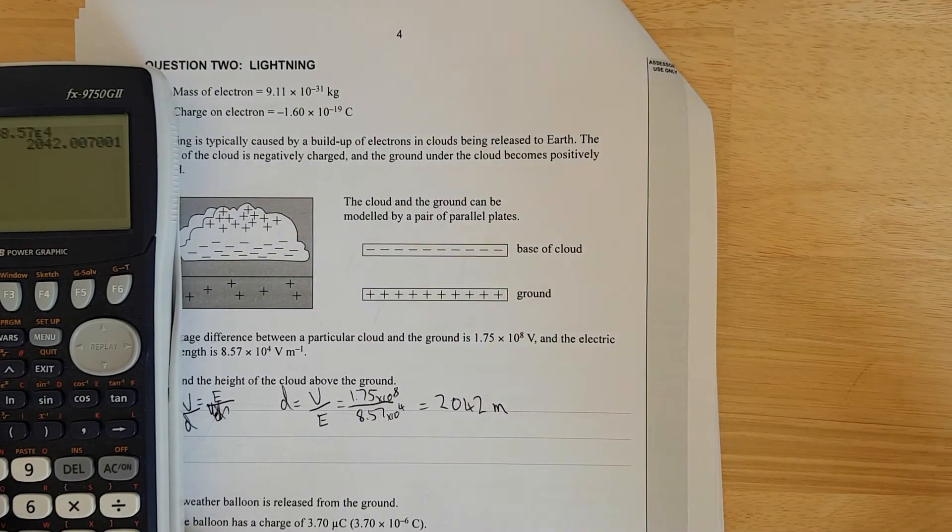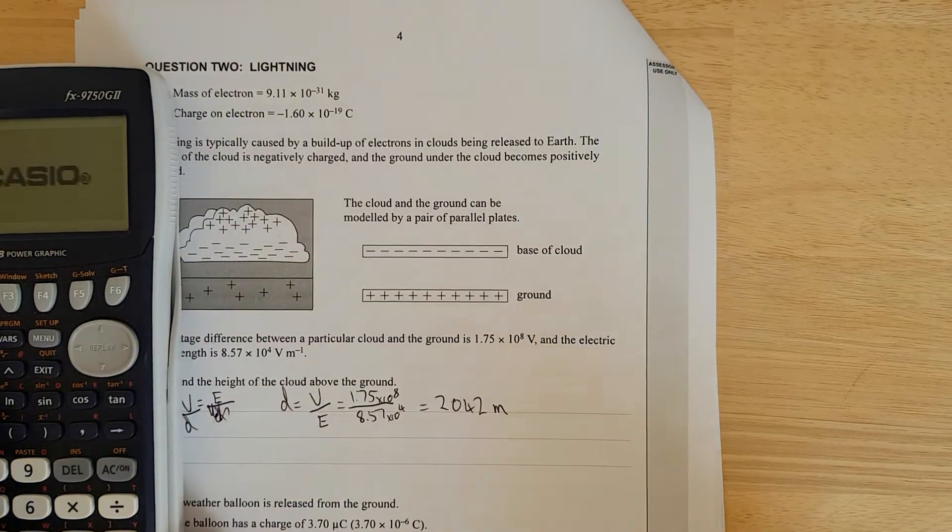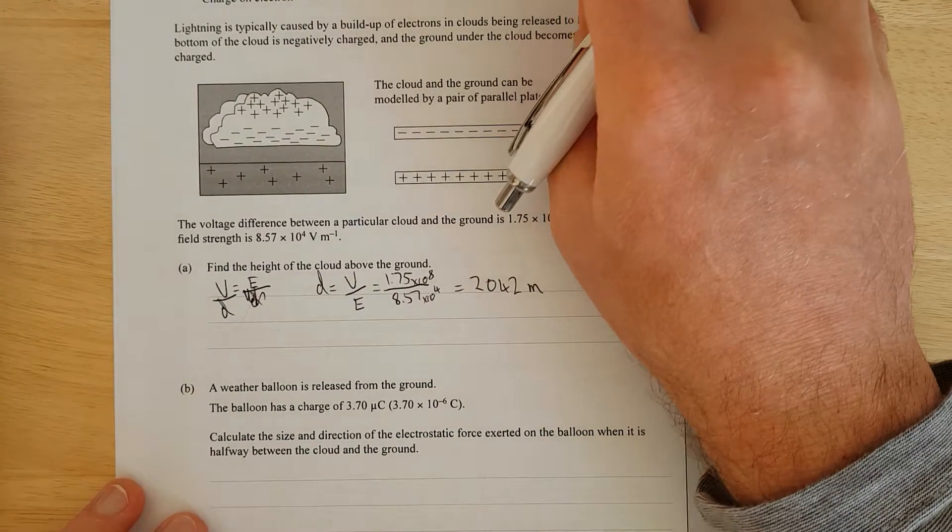2,042 meters, which is about 6,000 feet. Yeah, it's reasonable, cloud base 6,000 feet. It's quite a high cloud, probably like a towering cumulonimbus. What a nice sunny day.